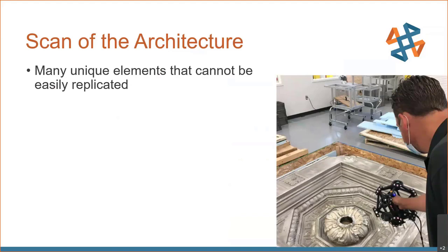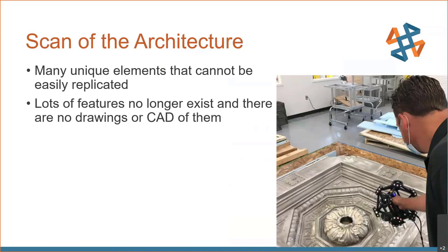We have our scan of the architecture, and there are lots of unique elements all over the place that can't be easily replicated. These were all handmade back in the day — there were no CAD files, and any drawings are probably lost. You're not going to have detailed drawings of things like the top corner pieces, which are hand-plastered filigrees. They'd just say 'artistic license over here, have fun.'